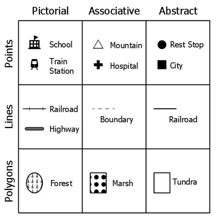Symbols are used in cartography to communicate geographical information generally as point, line, or area features. As with other symbols, visual variables such as size, shape, orientation, texture, and pattern provide meaning to the symbol. The form, or shape, of a cartographic symbol is classified into one of three main groups: pictorial representational — a shape or image that clearly resembles the geographic feature being symbolized and can be interpreted without a legend; associative — a mixture of pictorial and geometric elements that produce an easily recognizable shape; and abstract geometric — completely arbitrary shapes chosen to represent a certain feature.